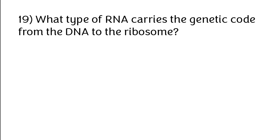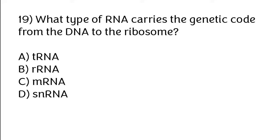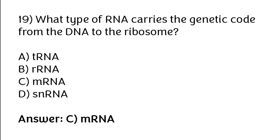Which type of RNA carries the genetic code from DNA to the ribosome? Options: tRNA, rRNA, mRNA, snRNA. The correct answer is option C — mRNA carries the genetic code from DNA to the ribosome.